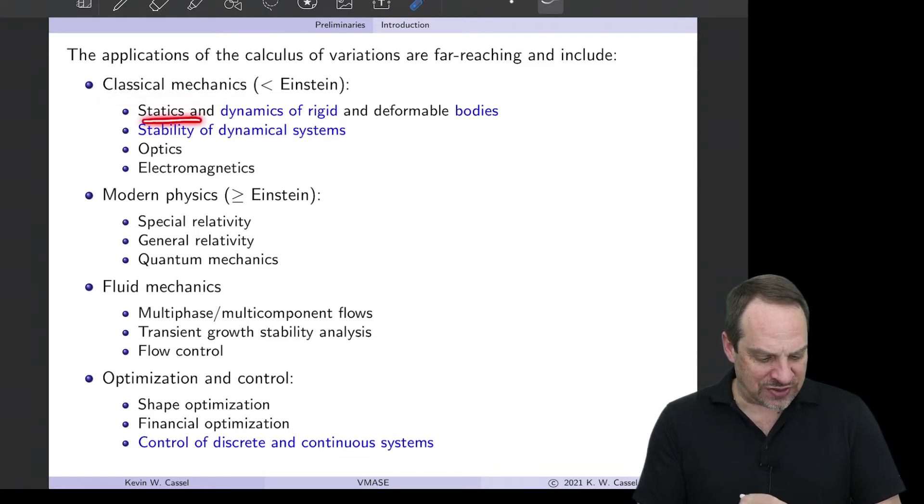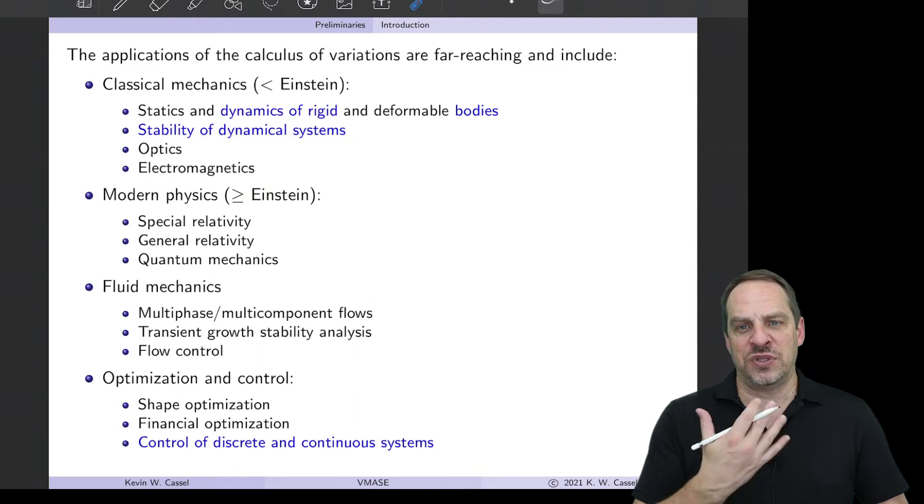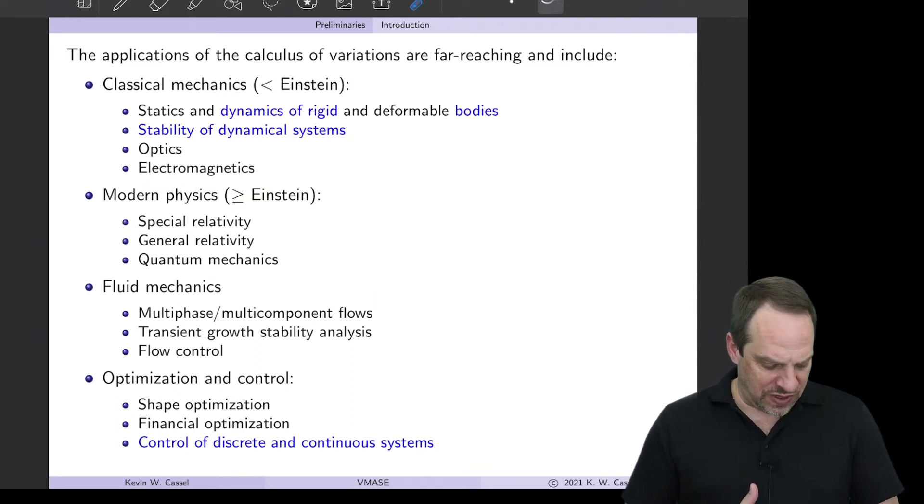Classical mechanics, that's things like statics, dynamics of rigid and deformable bodies, stability of dynamical systems, optics, electromagnetics. These were all things that were developed up through and including the 1800s that preceded the modern physics that Einstein introduced in the early part of the 1900s.